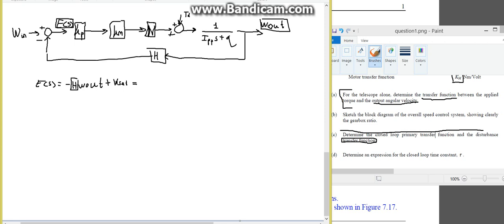Remember, h was 1, and your set was neglected, so it's 0. So, therefore, your error signal, es, just simply equals negative of your output.